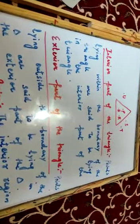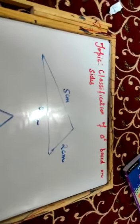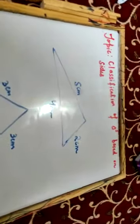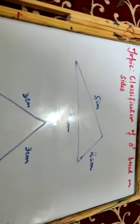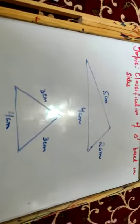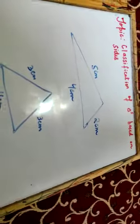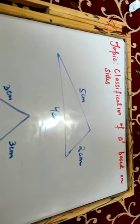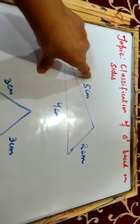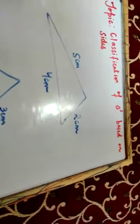Now we will discuss classification of triangles based on sides. Our next topic is classification of triangles based on sides — triangle ke types based on sides. You can see here I have written three different types of triangles with measurements written without using a ruler. If we look at the first triangle, there are three sides: one side is 5 cm, one is 4 cm, and one is 2 cm.